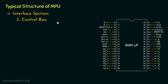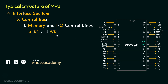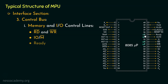The Control Bus is subdivided into three different categories. At first we have the Memory and I/O control lines. In this category we have the RD bar and WR bar, that is the Read and Write pins — basically pin numbers 32 and 31. Then we have the IO/M bar pin, that is pin number 34. The pin number 35, that is the Input Pin Ready, also falls into this category. Then we have ALE, that is pin number 30. Finally, we have the status lines S0 and S1, that is pins 29 and 33. Notice, these are all used to control the memory and the input-output devices.